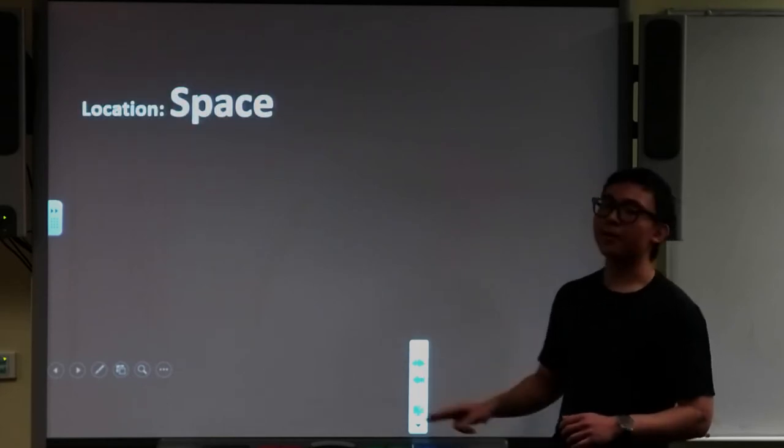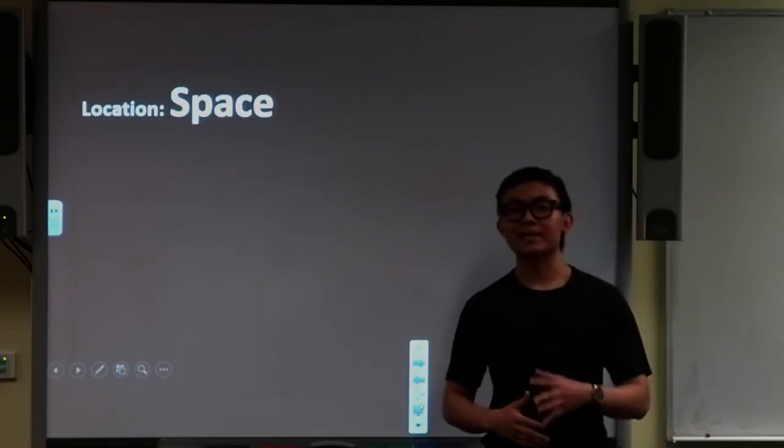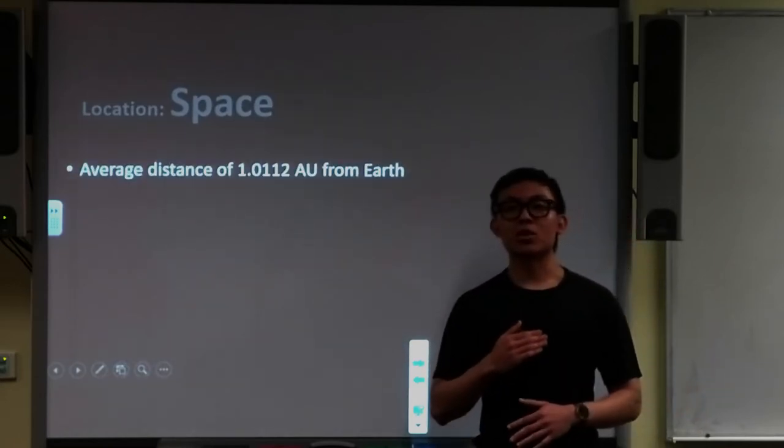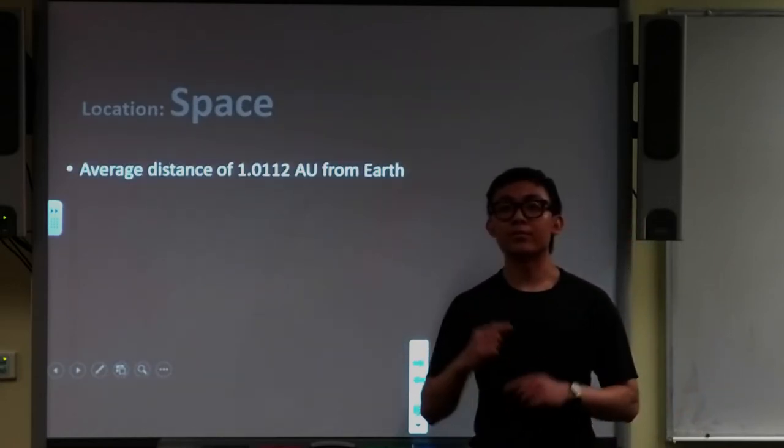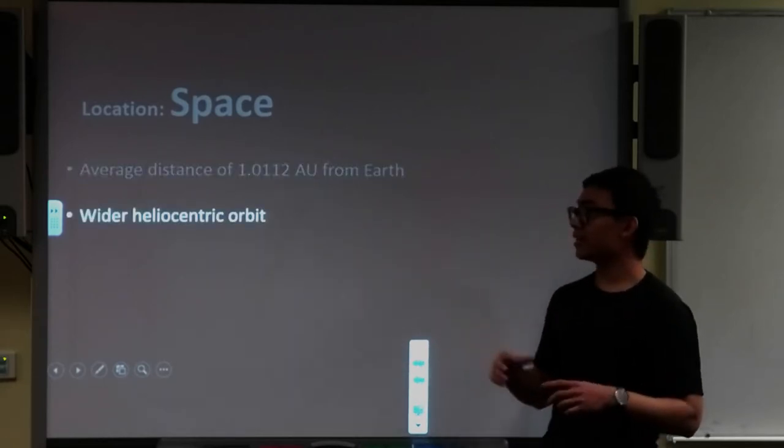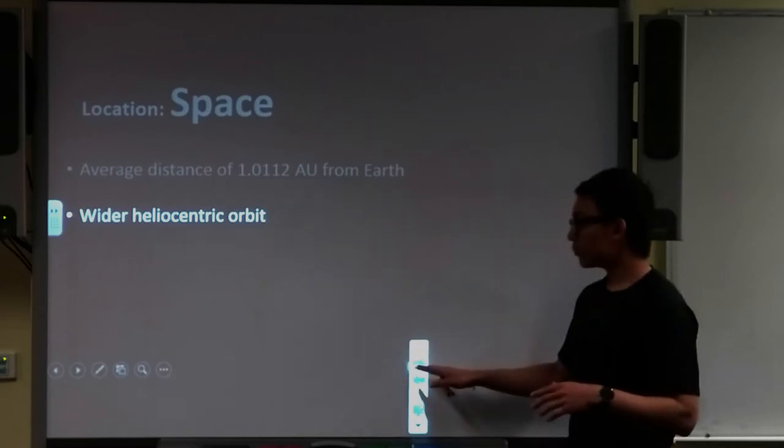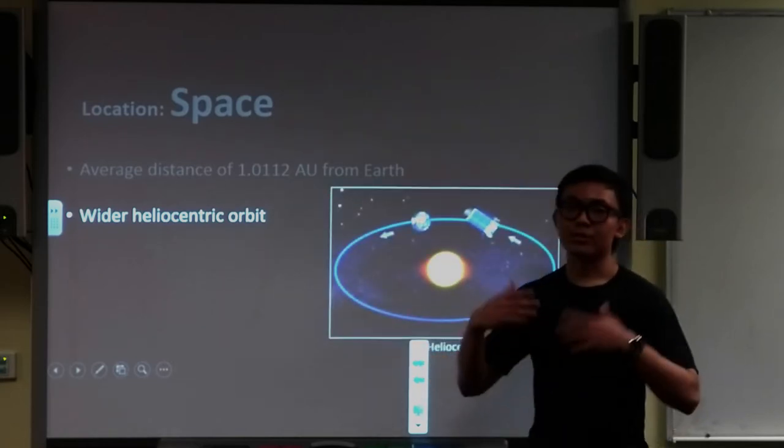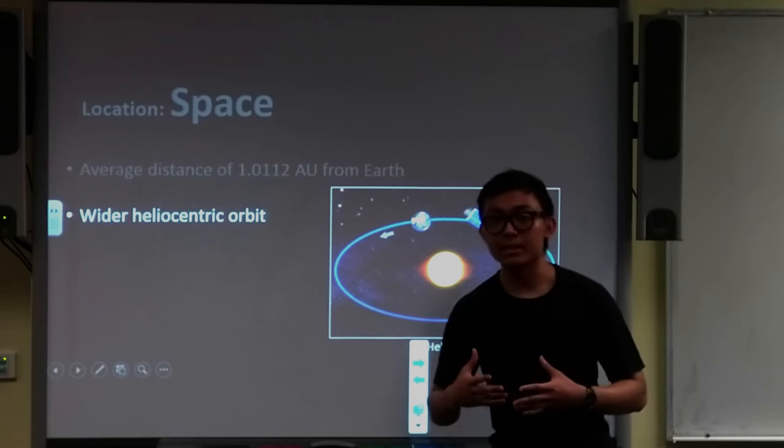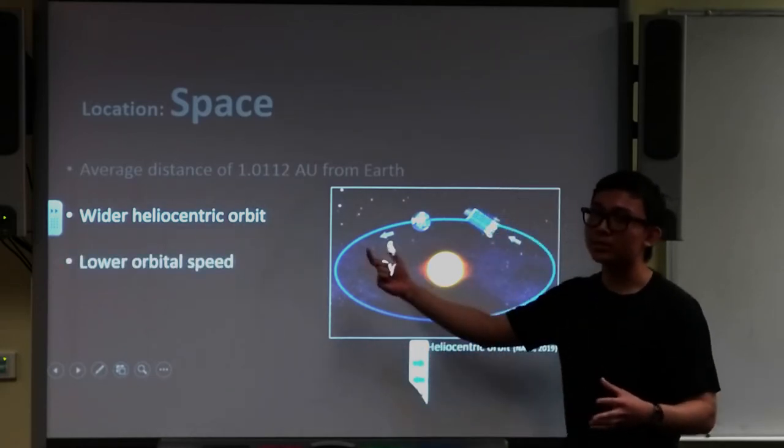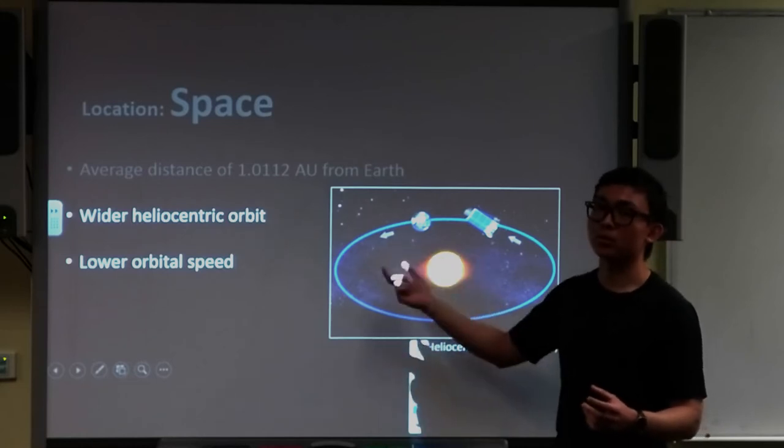Now apparently the telescope is located in space, and it is at an average distance of one astronomical unit from the Earth. And it's actually in a wider heliocentric orbit compared to Earth. So according to Newton's law of gravitation, it's actually moving at a lower orbital speed. So the telescope is actually trailing behind the Earth over time.